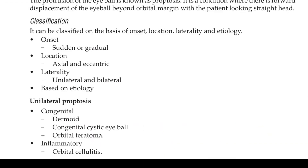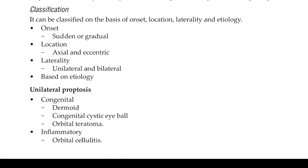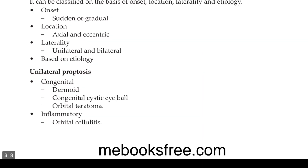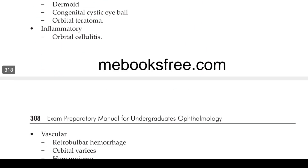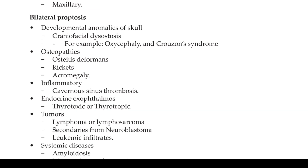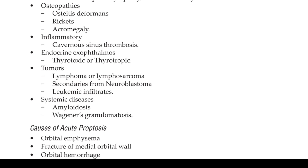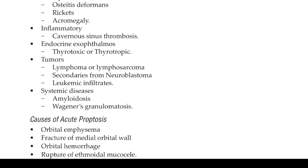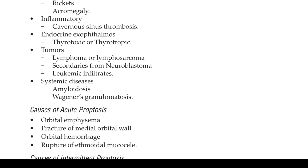Summary recap: based on onset — sudden or gradual; location — axial or eccentric; laterality — unilateral or bilateral. Unilateral causes include congenital, inflammatory, vascular, cystic, tumors, or mucocele. Bilateral causes include skull anomalies, osteopathies, inflammatory, endocrine like thyrotoxicosis, tumors, and systemic diseases.